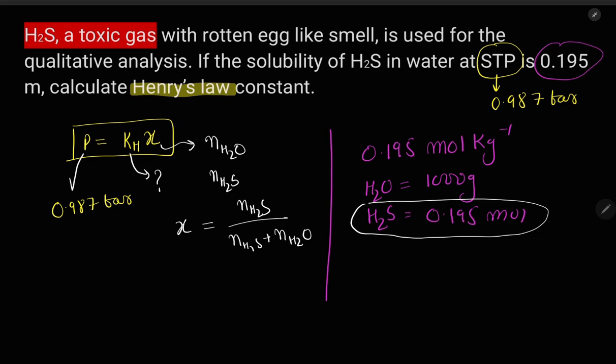Now the water is 1000 grams. So number of moles of water will be given mass of water, 1000 grams, upon molar mass of water, 18 grams per mole. This comes out to be 55.5 moles.